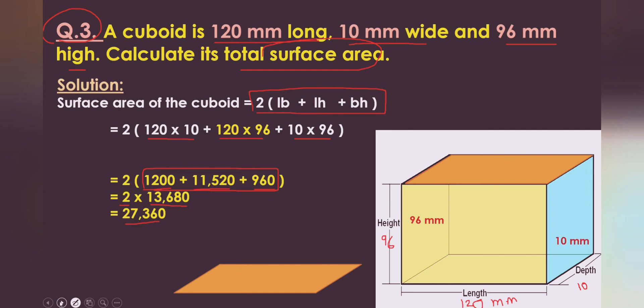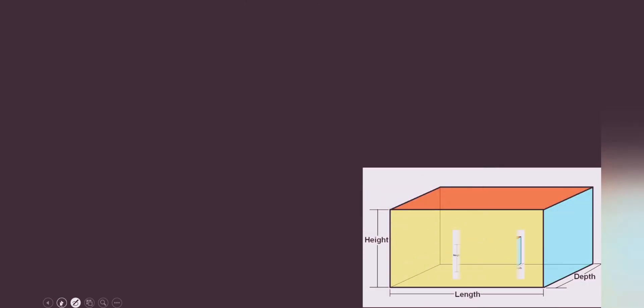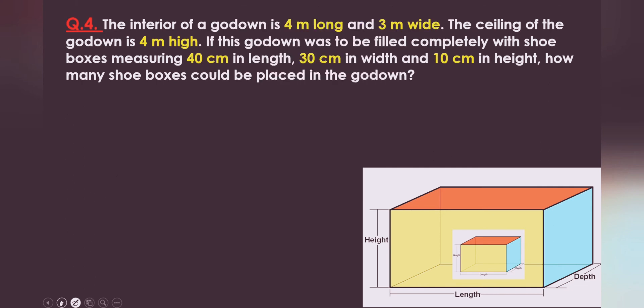If you keep practicing, it will get easy. Here is another problem — it's a little bit different. Read the question: the interior of a godown is 4 meters long, 3 meters wide, and the ceiling is 4 meters high, meaning the height is 4 meters.